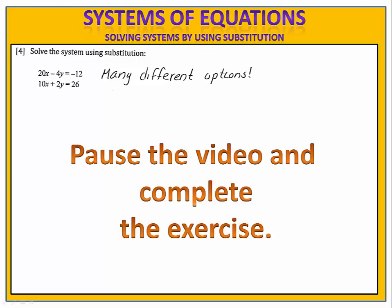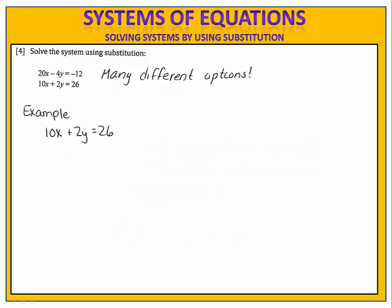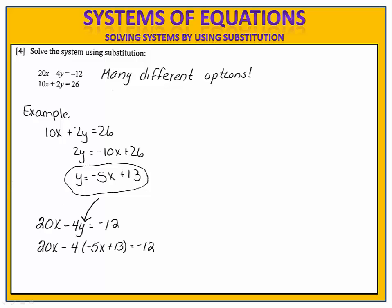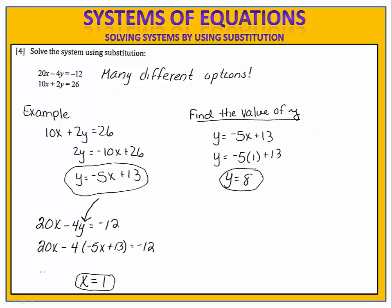There are several possible ways you might have approached this using substitution. I'm going to present one possible way, but you may have come up with something a little different. Either way, the solution should be the same. For my example, I'm going to solve 10x plus 2y equals 26 for y, so that y equals negative 5x plus 13. I substitute that into the other equation to get x equals 1. Now I look for the corresponding y value. I've picked one of the equations, y equals negative 5x plus 13. Substitute in the 1 and find that y equals 8. The solution to the system of equations is the point (1, 8). x equals 1 and y equals 8 are the only two values that you can substitute into both equations to make them true simultaneously.